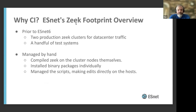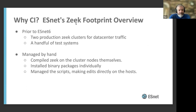So why CI? We showed the picture of ESNet-5. Probably five or six years ago we started developing ESNet-6, a major DOE-funded project to completely rebuild the network from the ground up — not just replacing routers, but a complete rebuild. Before that, all we had was two production Zeek clusters for data center traffic and a handful of test systems. We compiled Zeek directly on the cluster nodes, installed binary packages individually, managed scripts, often making edits directly on the hosts. It wasn't too bad with just two systems.